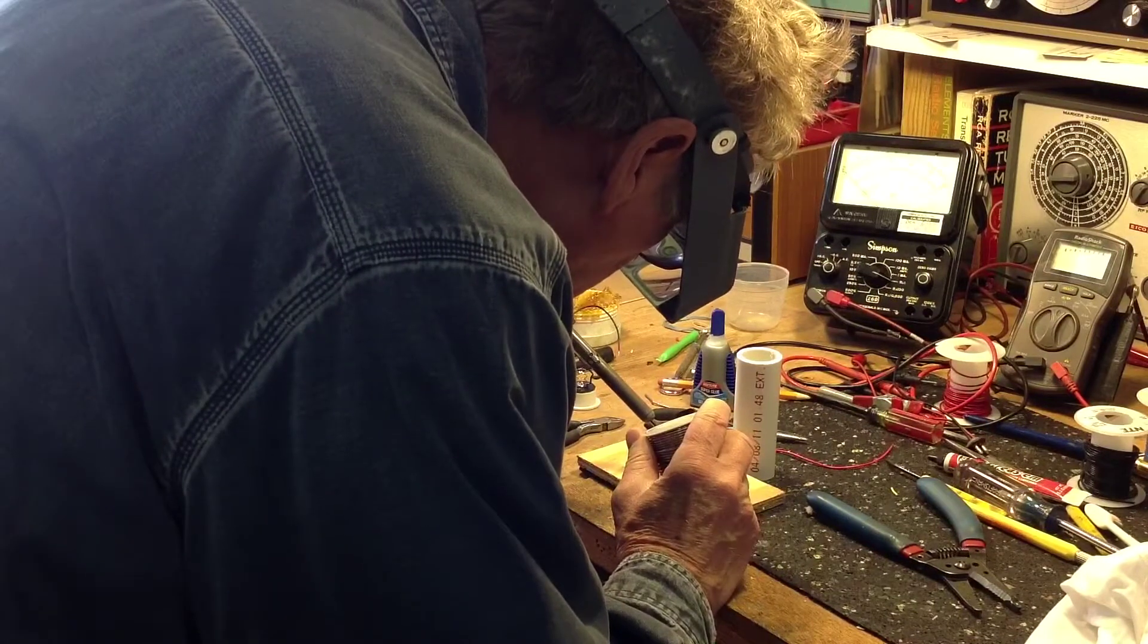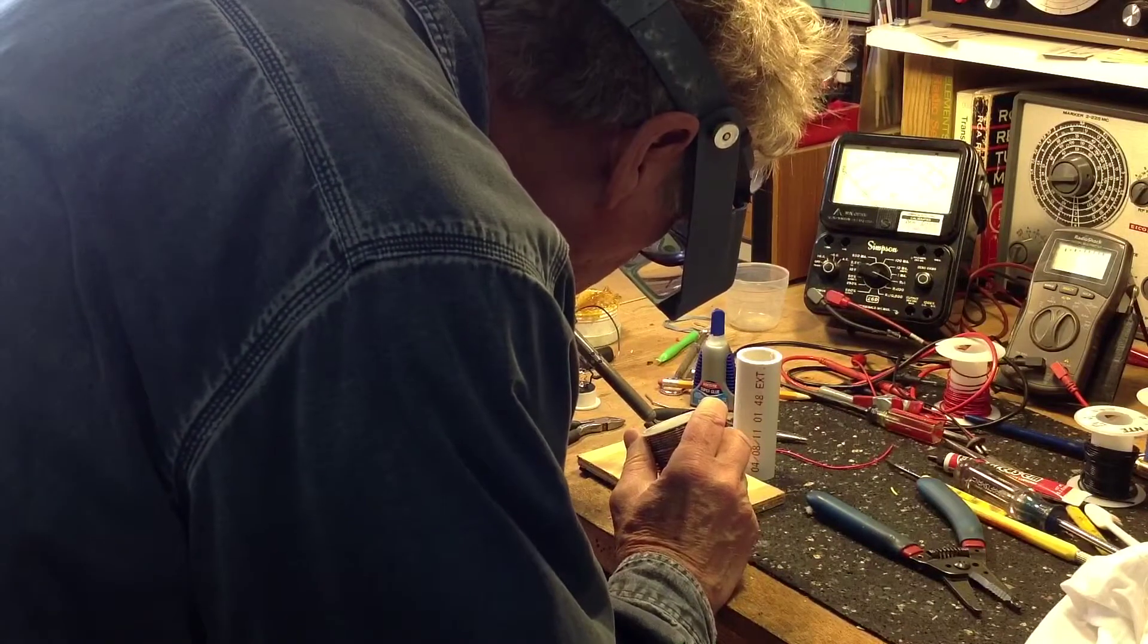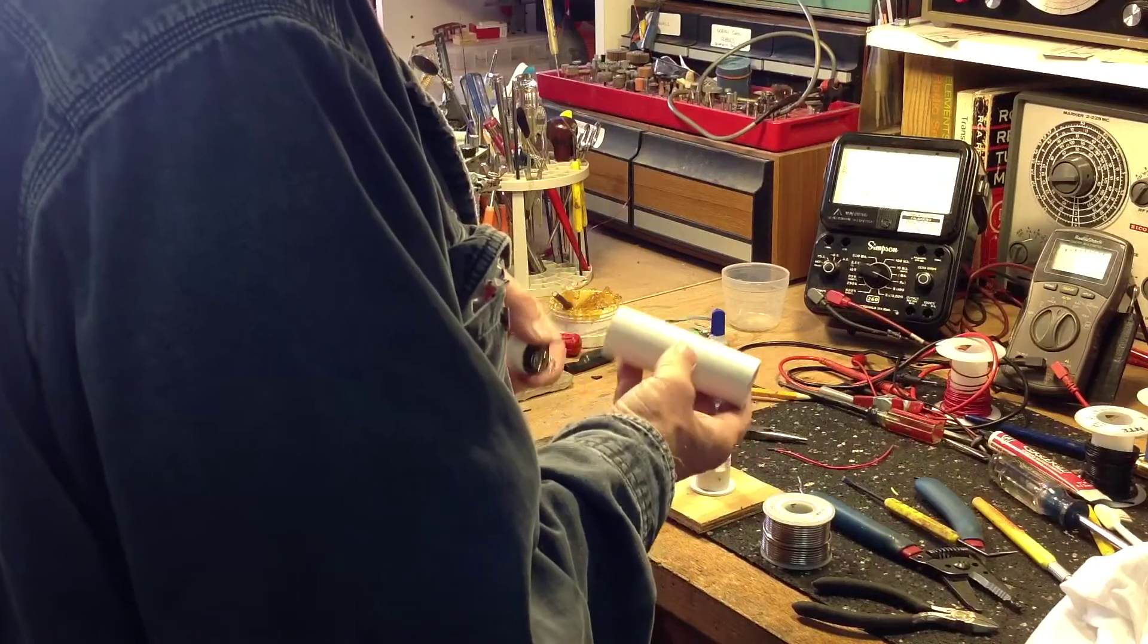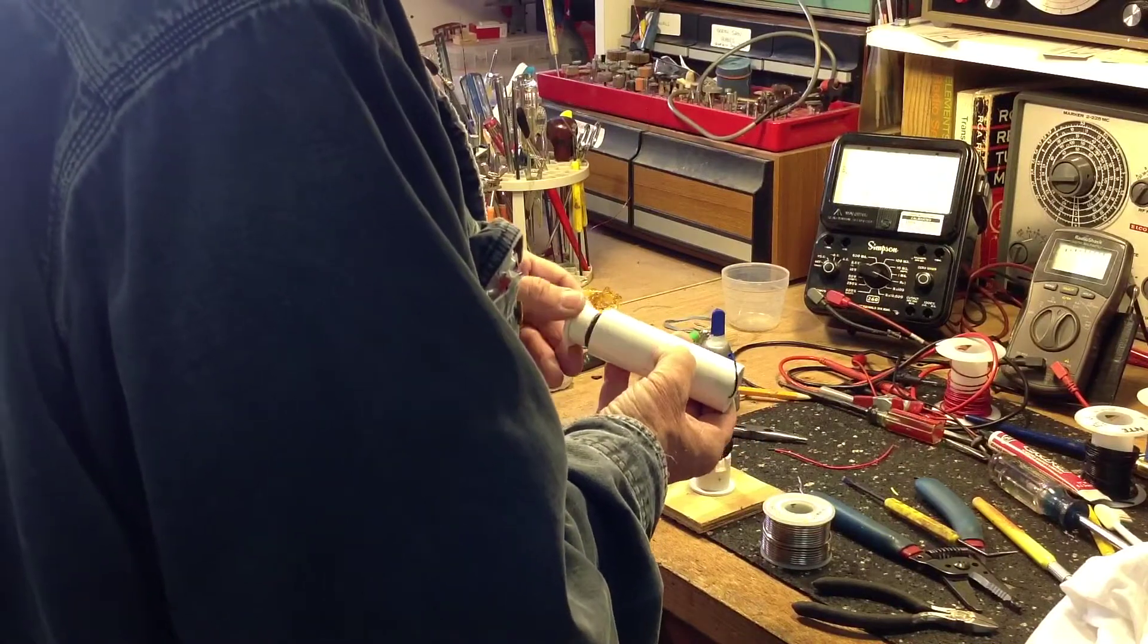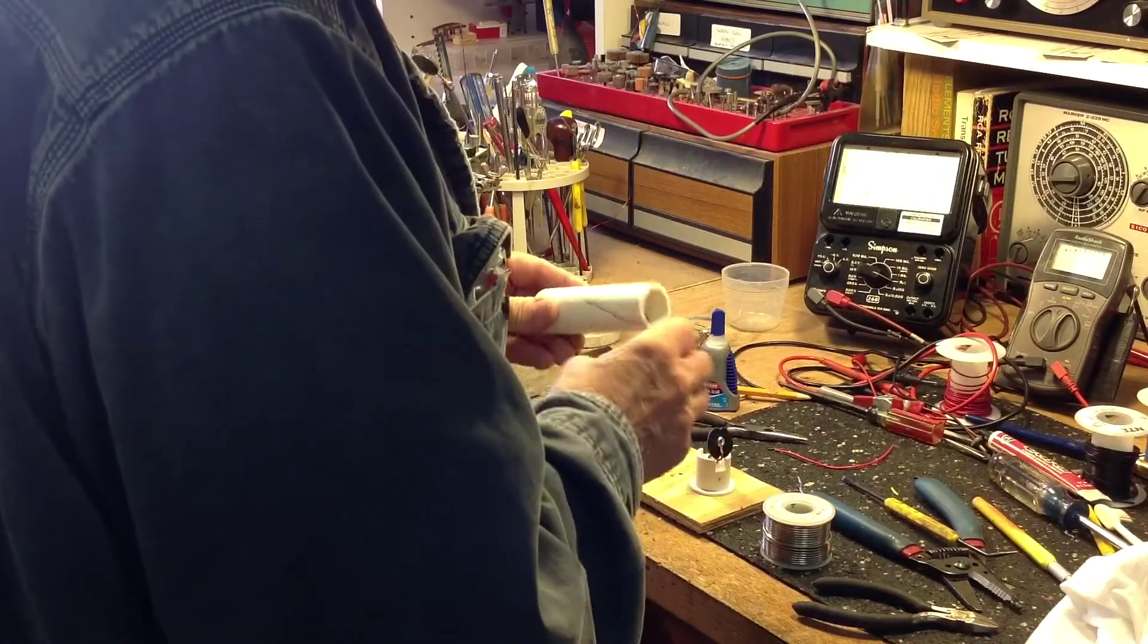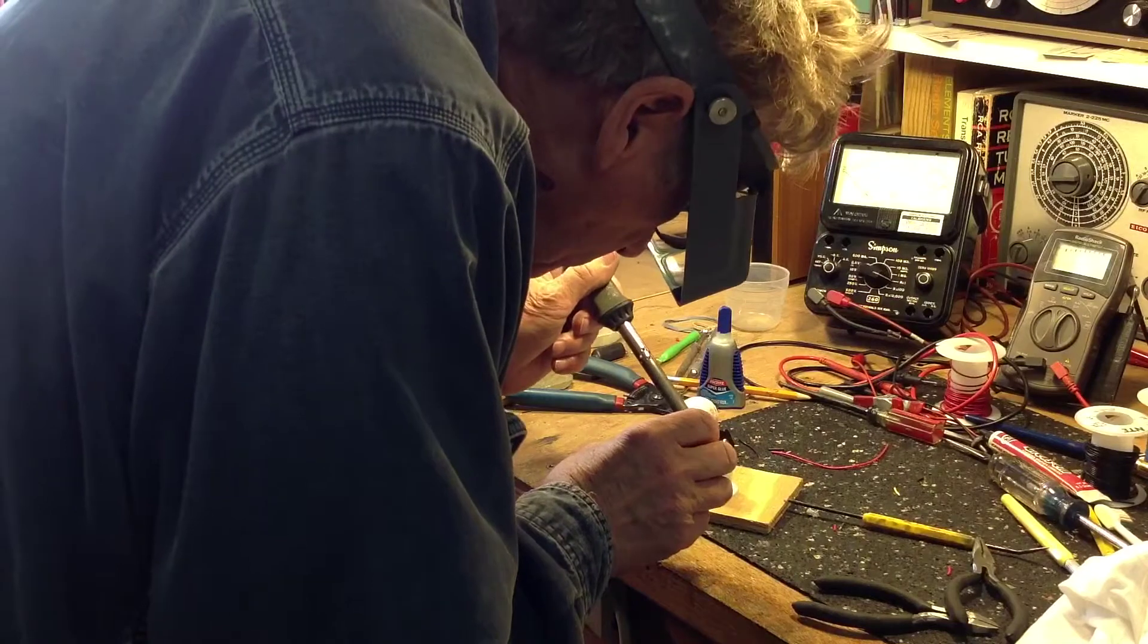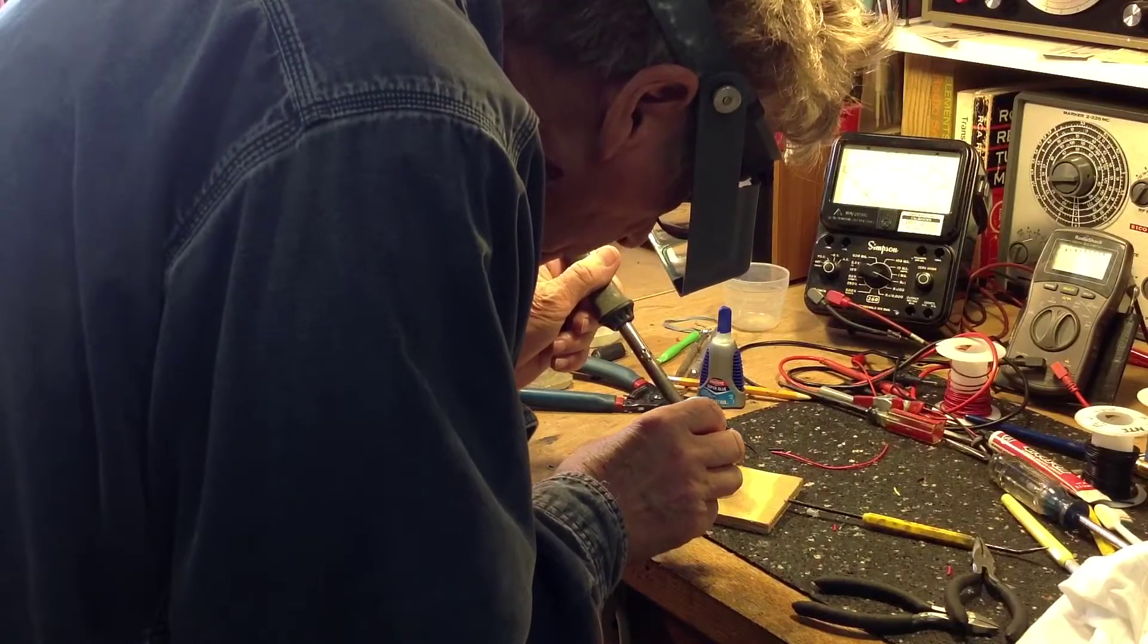And then we'll do the negative end. Okay, now I'm passing the negative wire up through the body. We'll trim that wire a little bit, and then solder it in place to the smaller pin on the connector end.